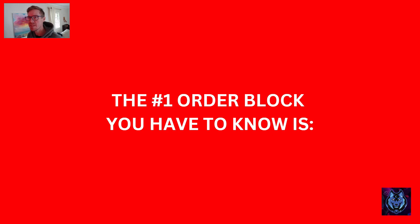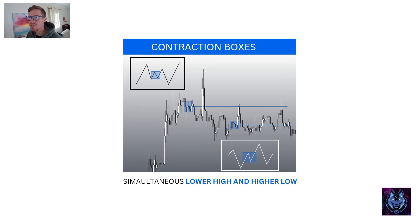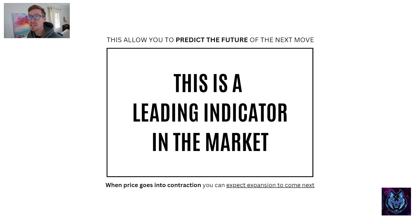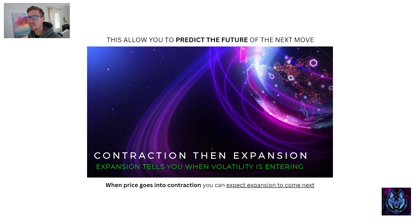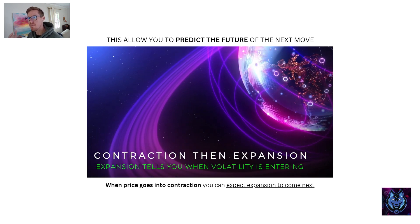The number one order block is the contraction box. It happens when price squeezes and you get a first lower high and higher low occurring on the chart. We mark the box off. This is one of the most important aspects to become aware of on your chart, because it allows you to predict the future — it is a leading indication of what is going to happen next. When price goes into contraction, the next phase is expansion. We draw a box and wait until price expands out of it, confirming the second phase of the market has started.